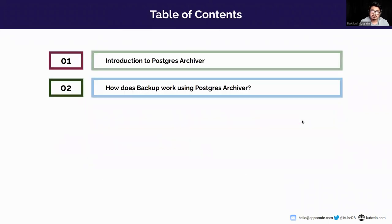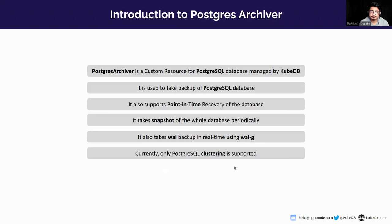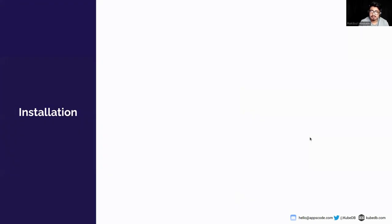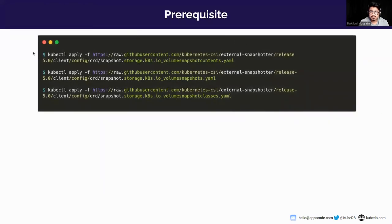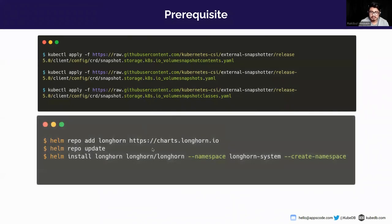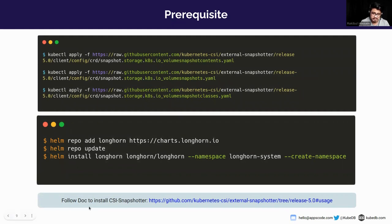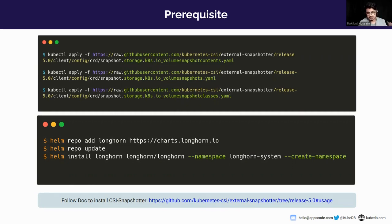Before the demo, I'll show some of the installation process. You can install KubeDB using this Helm command, and you can install the volume snapshot controller using this YAML. If you want to install the storage class, you can install it using this Helm command. I've already installed all of this, and you can go to the session shorthand link to this repository.